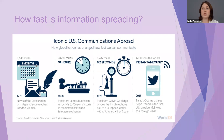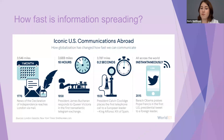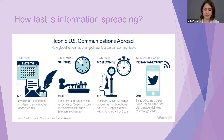How fast is information spreading? In 1776, it took one month for news of the Declaration of Independence to reach London by mail. In 1858, it took 10 hours for President Buchanan to respond to Queen Victoria in the first transatlantic telegram. In 1928, it took 0.2 seconds for President Coolidge to place the first telephone call to a European leader. In 2015, Barack Obama's tweet to Pope Francis was instantaneous. Which means if information travels this fast, so does misinformation.